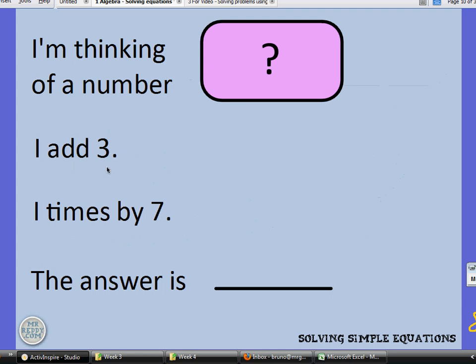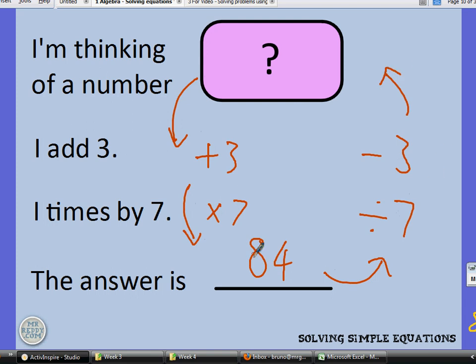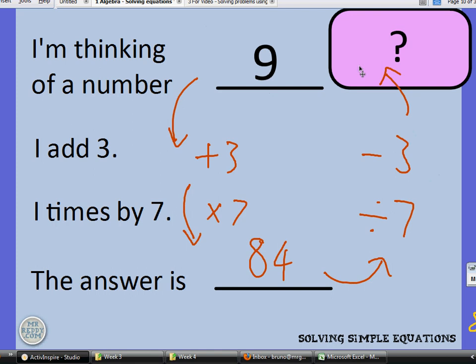This time I'm thinking of another number. I add 3 and then I times that answer by 7 and the answer I get is 84. So in this direction, we added 3 and then times by 7 and the answer was 84. So to go in reverse, I'll need to divide by 7 first and then take away 3 and that should give me the answer. 84 divided by 7 is 12 and 12 take away 3 is 9. Let's look at what we're doing. We're doing the inverse, we're doing reverse order and we're doing the inverse operations.